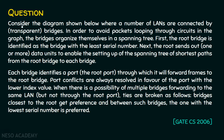The question is: Consider the diagram shown below where a number of LANs are connected by transparent bridges. In order to avoid packets looping through circuits in the graph, the bridges organize themselves in a spanning tree. First, the root bridge is identified as the bridge with the least serial number. Next, the root sends out one or more data units to enable the setting up of the spanning tree of the shortest paths from the root bridge to each bridge. Each bridge identifies a port — the root port — through which it will forward the frames to the root bridge.